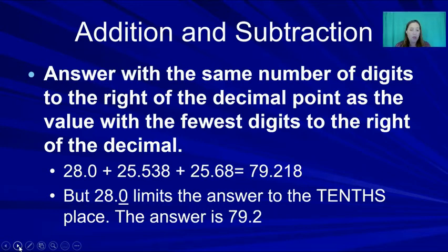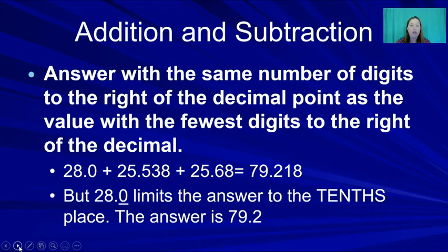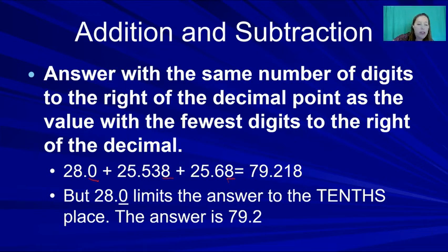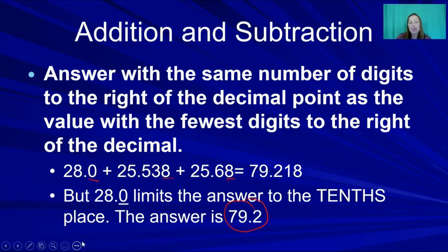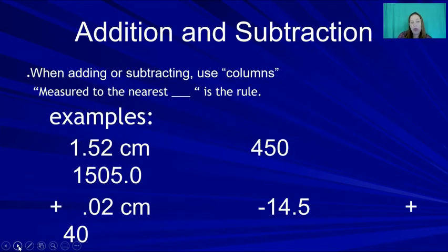Now, what do we do with significant figures in calculations? For addition and subtraction, your answer should have the same number of digits to the right of the decimal as the value with the fewest digits to the right of the decimal. Line up your numbers: the tenths, hundredths, and thousandths places — the least precise place (tenths) limits what you round to.